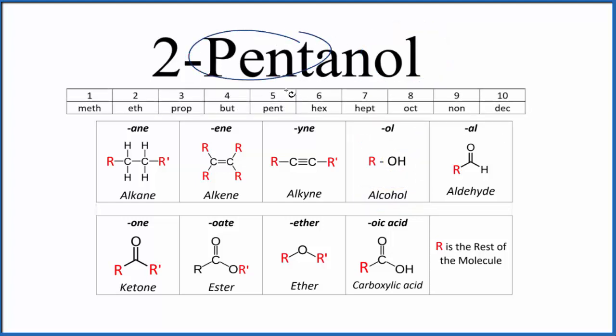The pent right here, pent tells us we'll have five. So we're going to have five carbons and they'll all be single bonded and we'll have an OH group on that. That OH group, that's going to be on the second carbon.